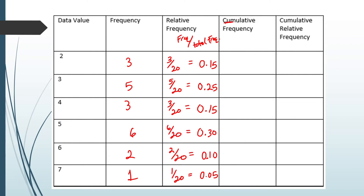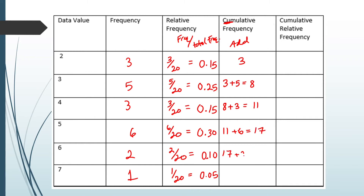To calculate the cumulative frequency we need to do addition. Start by copying the first frequency, which is 3. For the next cumulative frequency, add 3 plus 5 to get 8. For the third row, take 8 and add the next frequency 3, giving us 11. Then 11 plus 6 gives us 17, then 17 plus 2 gives us 19, and finally 19 plus 1 gives us 20. The total must be 20 because we know 20 individuals were surveyed.